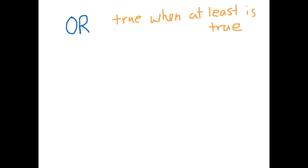So if you had A or B or C, as long as one of those three is true, then the statement is always true. So let's have a look at A or B, just like we did with the AND.